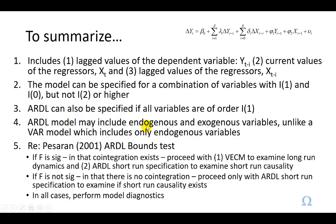The ARDL model may include endogenous and exogenous variables, unlike the vector autoregressive model, which includes only endogenous variables. In the bounds test approach, we test whether the long-run coefficients — phi1, phi2, and others — are statistically significant. If the F-statistic testing them is significant, we conclude that there is cointegration between X and Y, and then proceed with the vector error correction model representation to examine the long-run dynamics of the variables.